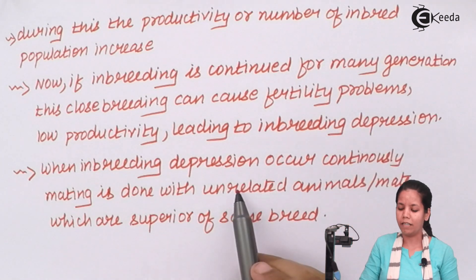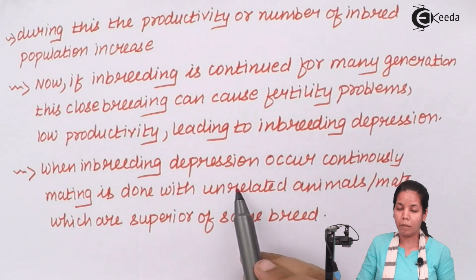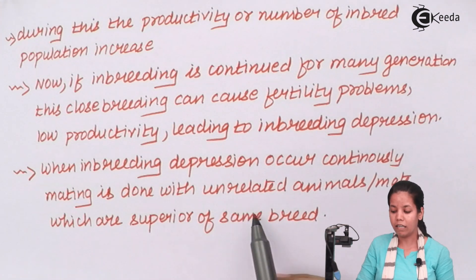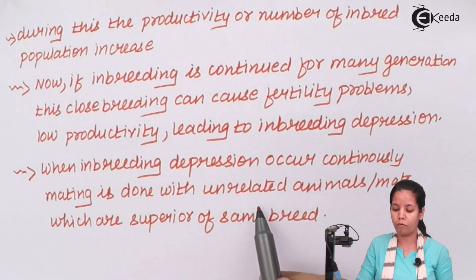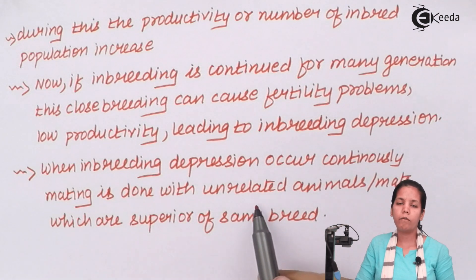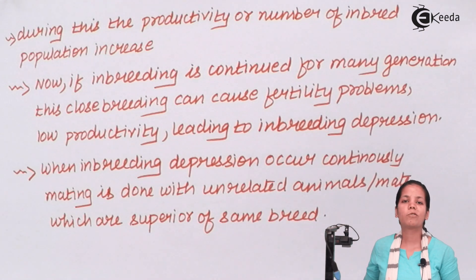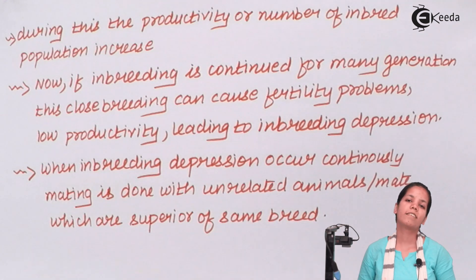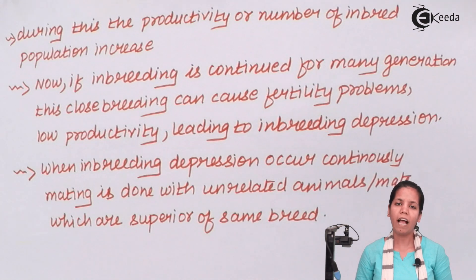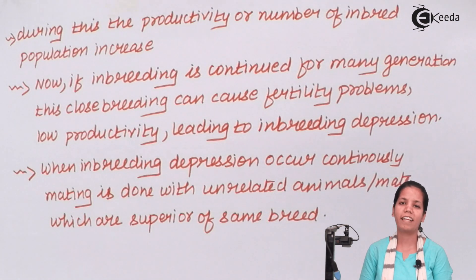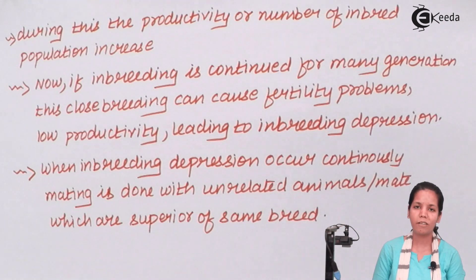Just to overcome inbreeding depression, breeding may be done with species which are similar but unrelated, or mates which are unrelated but of the same origin or same family can be used to overcome this problem. So students, in this part of the chapter we studied inbreeding and how inbreeding is done. I hope you are all very clear with this concept. Thank you.